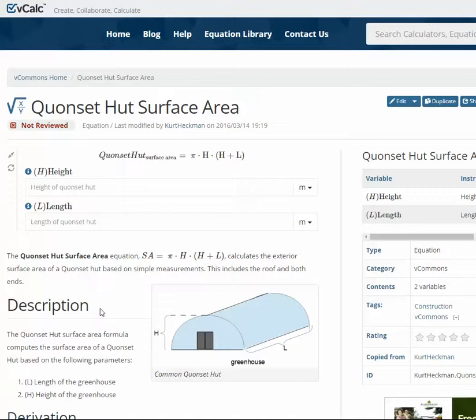The formula for the surface area of a Quonset hut is fairly straightforward. It's based upon geometric shapes involved in building a Quonset hut.